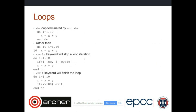Fortran 90 also introduced cleaner do loops. In Fortran 77, you used computed go-to statements with line numbers. In Fortran 90, there's an explicit `do` and `end do` syntax, along with `exit` and `cycle` keywords. `cycle` lets you skip the current iteration and move to the next, while `exit` lets you leave the loop early — both are useful for controlling program flow.